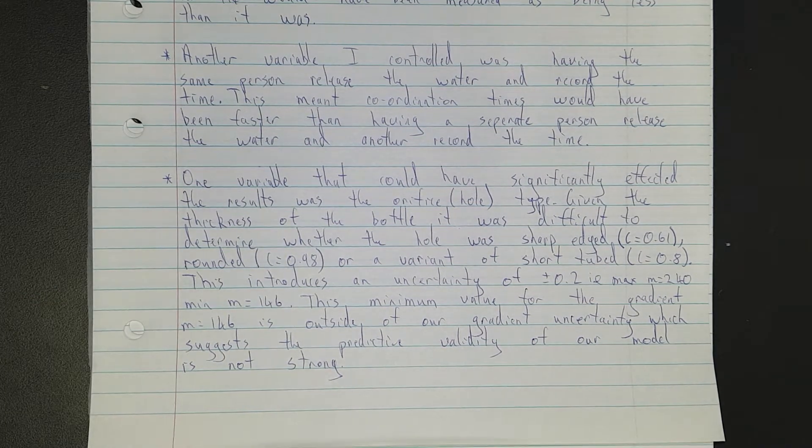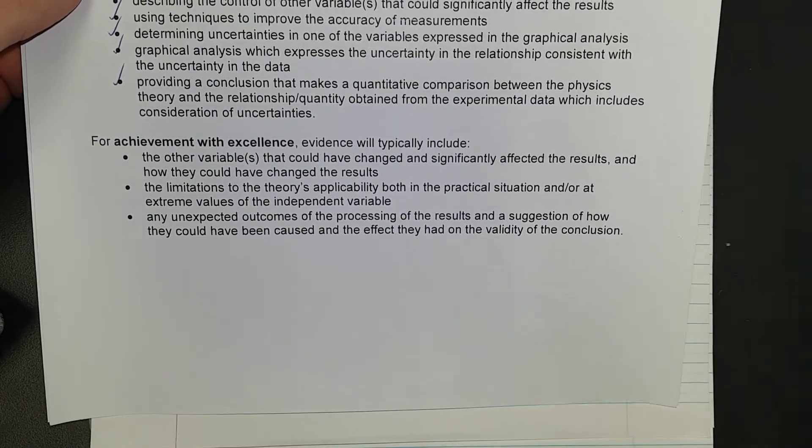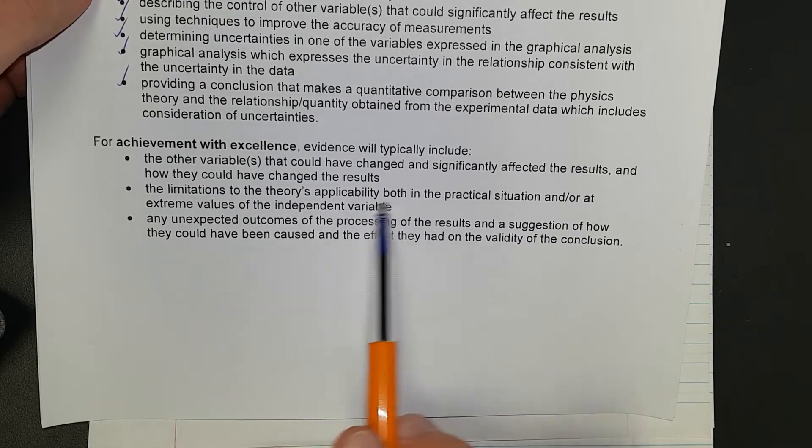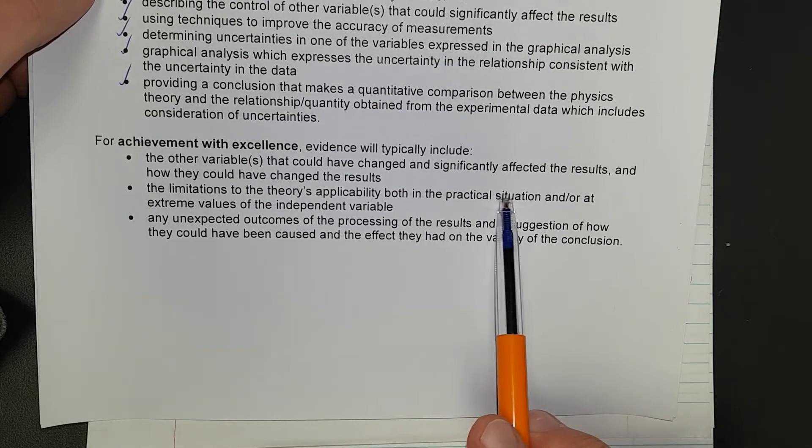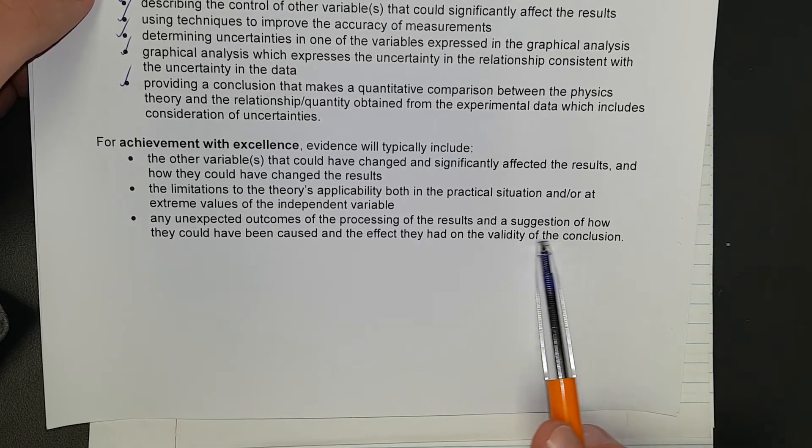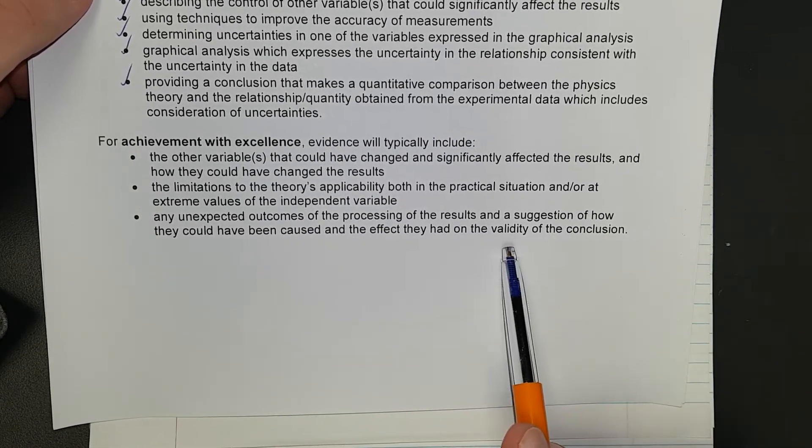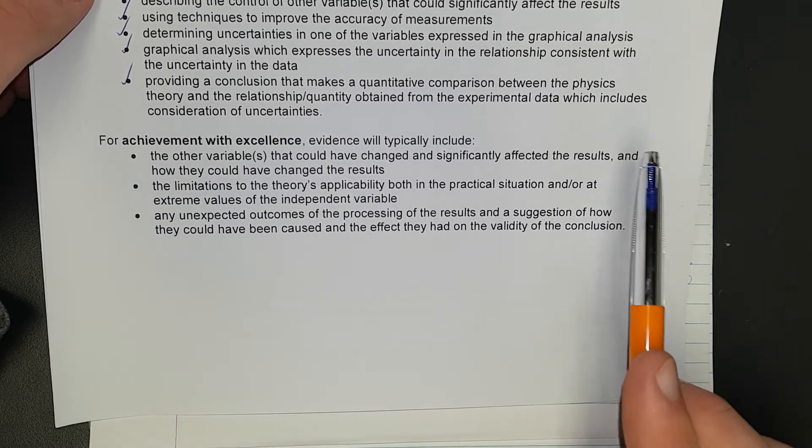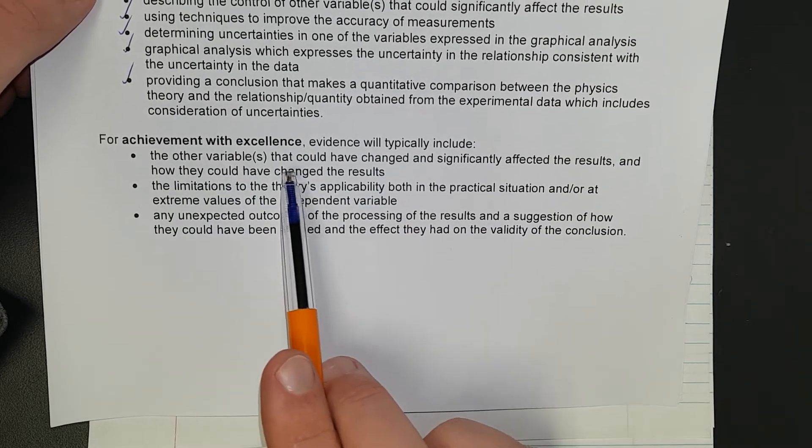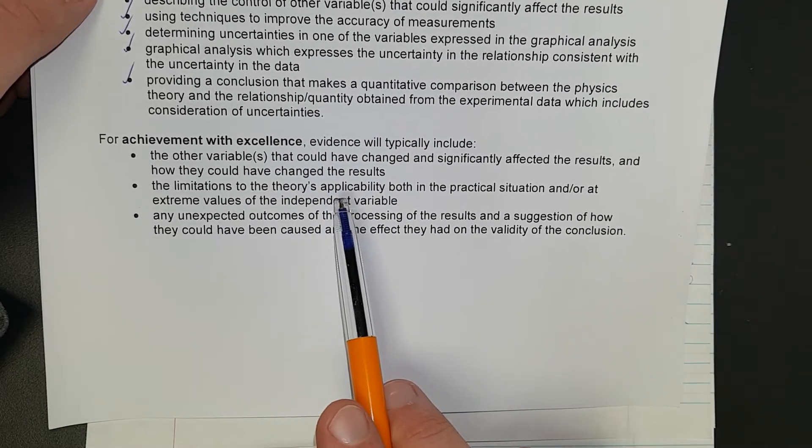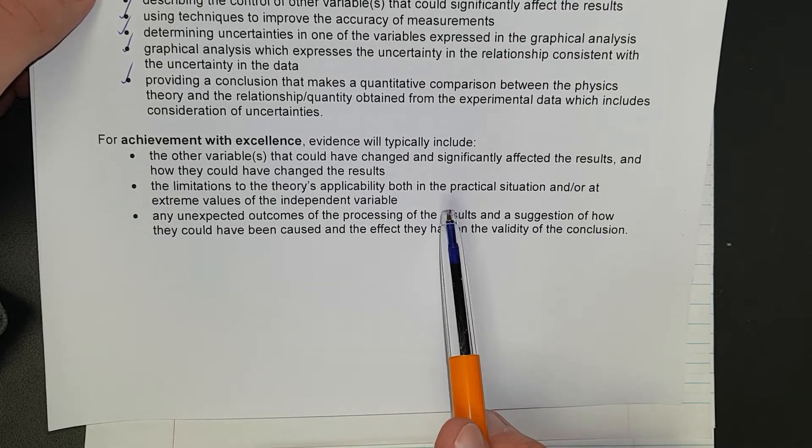This minimum value for our gradient, for the gradient 0.6 is outside our gradient uncertainty, which suggests the predictive validity of our model is not strong. So that, if we go back to our achievement outline criteria, that covers the limitation of the theory's applicability in both the practical and or the extreme values. That's more the applicability of the situation. And I will go on to do that as well. Maybe that one there could count. But that definitely counts the variable that could have changed significantly if it could have affected the results, because that would have really thrown them out if the C value wasn't what it is. So I'll pause the video and just do a final write-up of the limitations of the theory's practical applicability.